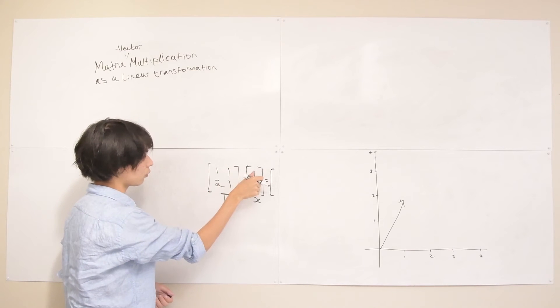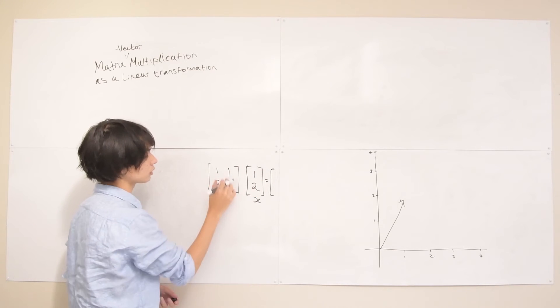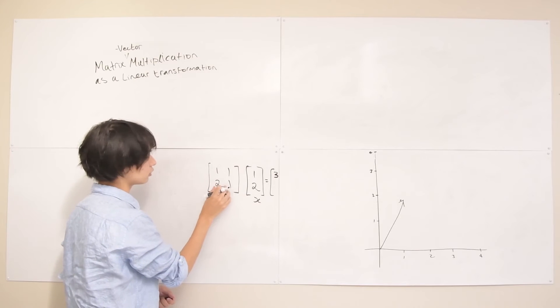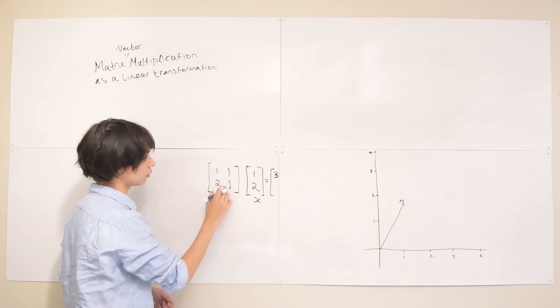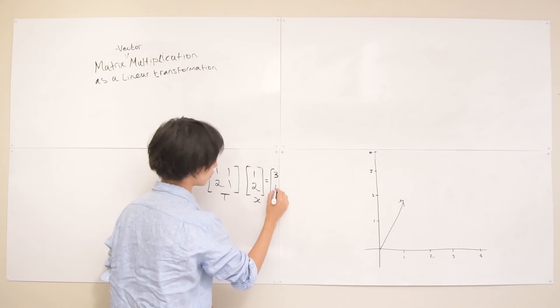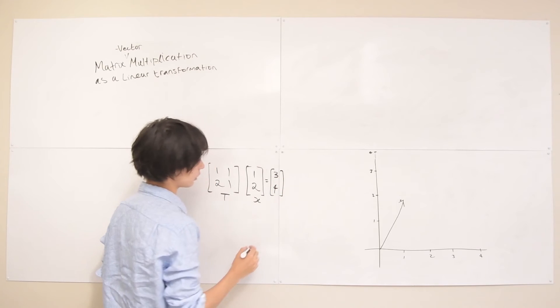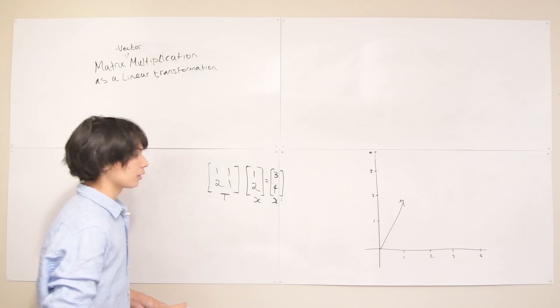If we multiply this X by T, we get some vector. 1 times 1 is 1, 1 times 2 is 2, so that's going to be 3. Then 2 times 1 is 2, 1 times 2 is 2, 2 plus 2 is 4. So that's going to be a resultant vector [3, 4], and let's call this X prime.